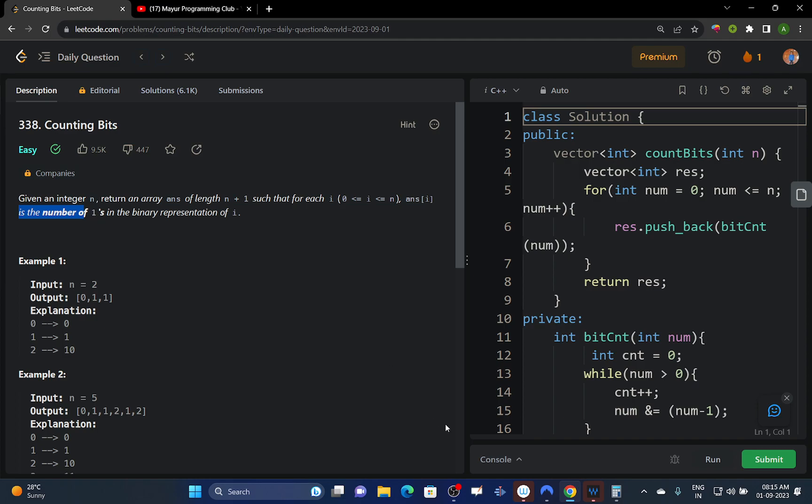So what I mean by this is, for example let's say you are given n equals 5, then your answer array will be of length n plus 1 which equals 6, and so it will be like this: 0, 1, 2, 3, 4, 5.